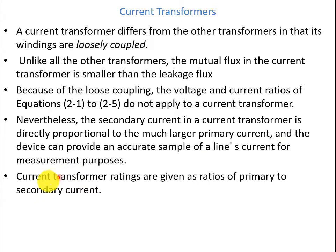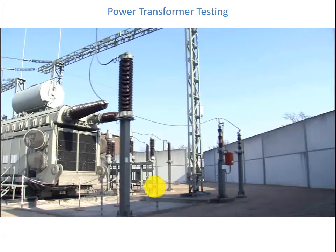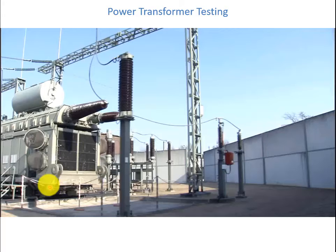Current transformer ratings are given as ratios of primary to secondary current. Here is a short video taken from the internet to show how these transformers are manufactured and tested, with certain points marked on the transformers. Let's look at this video.